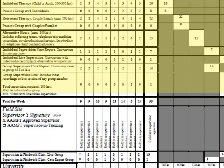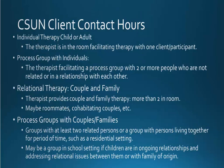That is how you count up your direct service as well as your supervision hours. There's a total at the end of the week and each column and each row gets totaled. Here's a quick overview of the categories: individual therapy with child or adult, process groups, relational therapy with a couple or family. There are two or more clients in the room, which may include roommates and cohabitating couples.